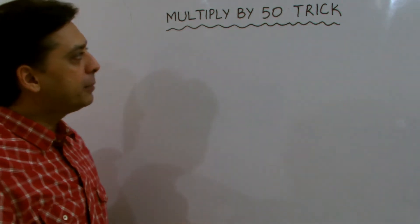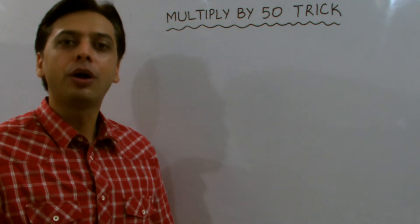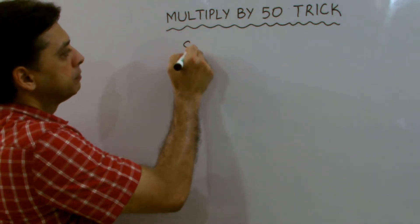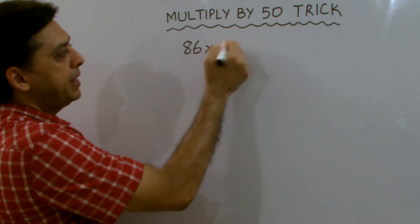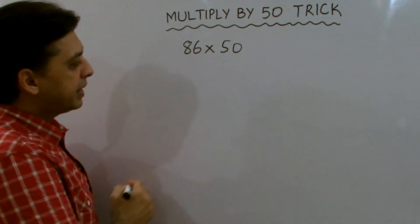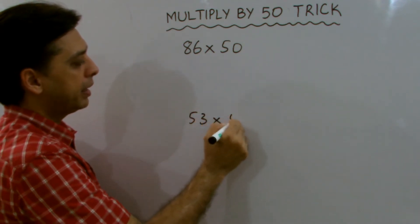If you're looking to multiply any number by 50, that number could be even or odd. I'll use two particular cases: 86 multiplied by 50, and an odd number, 53 multiplied by 50.